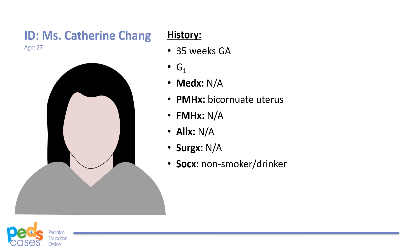Finally, we have Miss Catherine Chang. Catherine is 27 years old and is 35 weeks pregnant. She is expecting twins, one male and one female. This is Catherine's first pregnancy. In the past, Catherine has been told by her gynecologist that she has a bicornuate uterus. Catherine is otherwise healthy and does not drink or smoke.